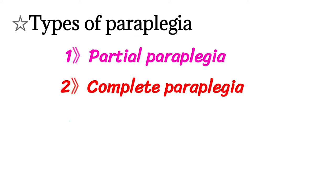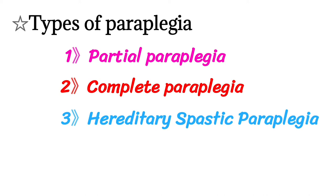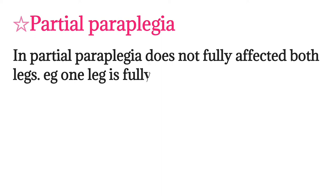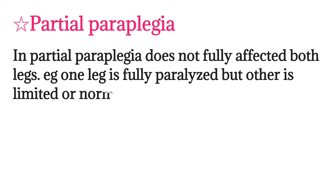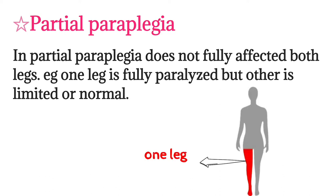There are three types of paraplegia: partial paraplegia, complete paraplegia, and hereditary paraplegia. In partial paraplegia, both legs are not fully affected — one leg is fully paralyzed but the other is limited or normal.